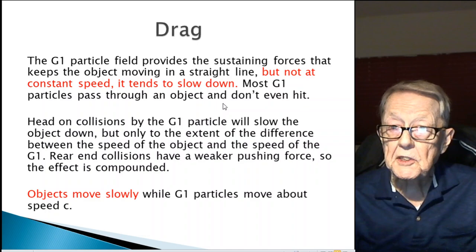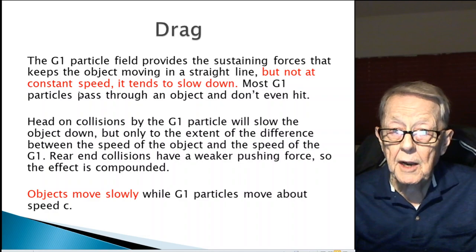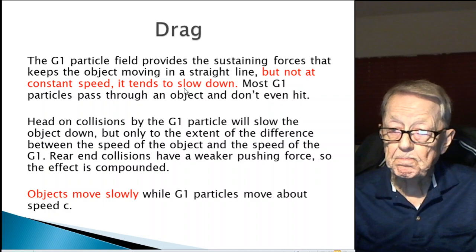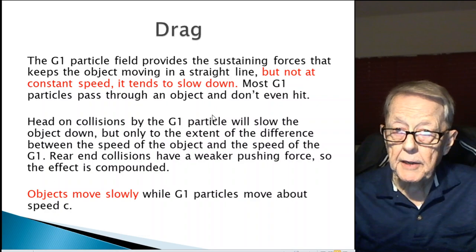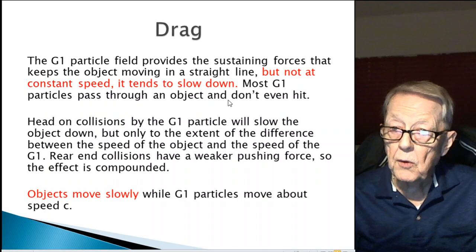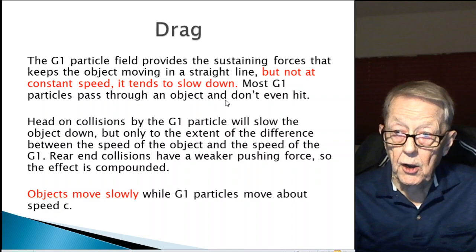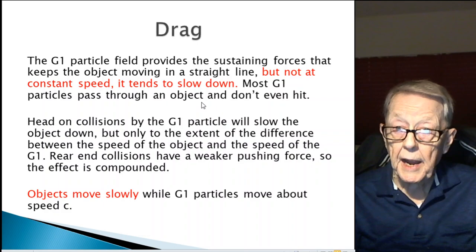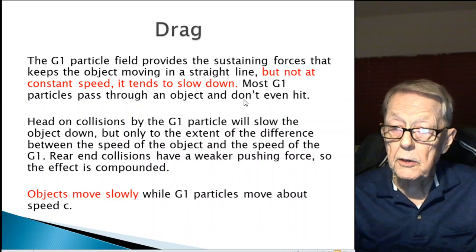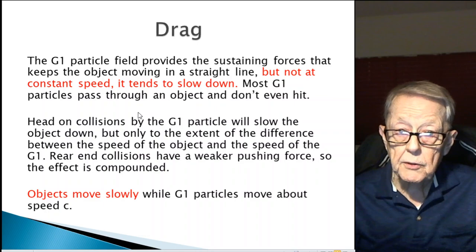Drag is the second one. The G1 particle field provides the sustaining forces that keeps an object moving in a straight line, but not at constant speed. It tends to slow down. That's what drag is, because the head-on collisions are greater than the rear-end collisions, and it tends to slow down. Most G1 particles pass through an object, though, and don't even hit. Again, what's the extent of drag? If you think, like Poincaré, that all of them are slamming the thing head-on, and even though there's less and less at the pushing, you'd think the drag would be huge.